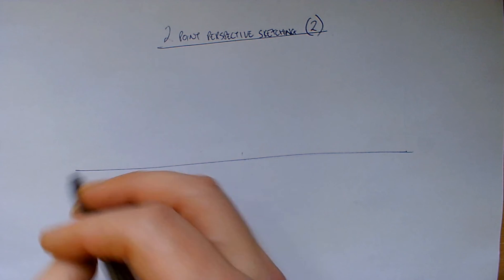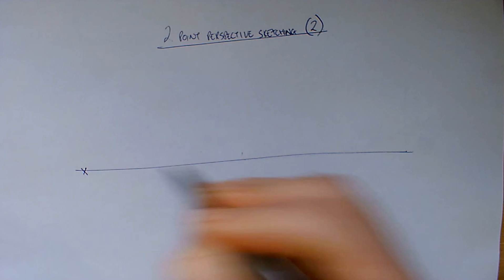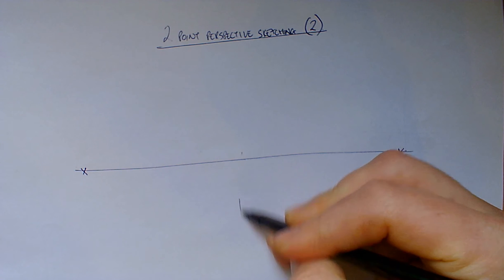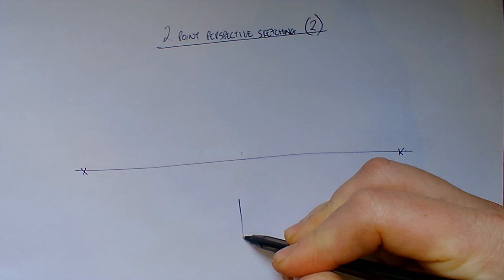From the horizon line now we can add our vanishing points. So we're going one at either end. And that's where all of our lines going to the sides will disappear to. So we'll start again, just a recap with the box that we drew below. We're going to start with the front edge, a nice straight line, slightly longer than what you want in the end.